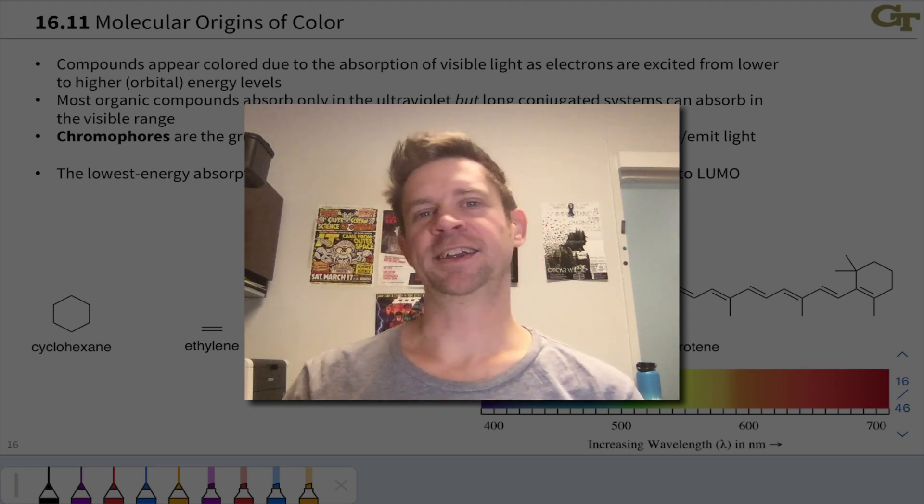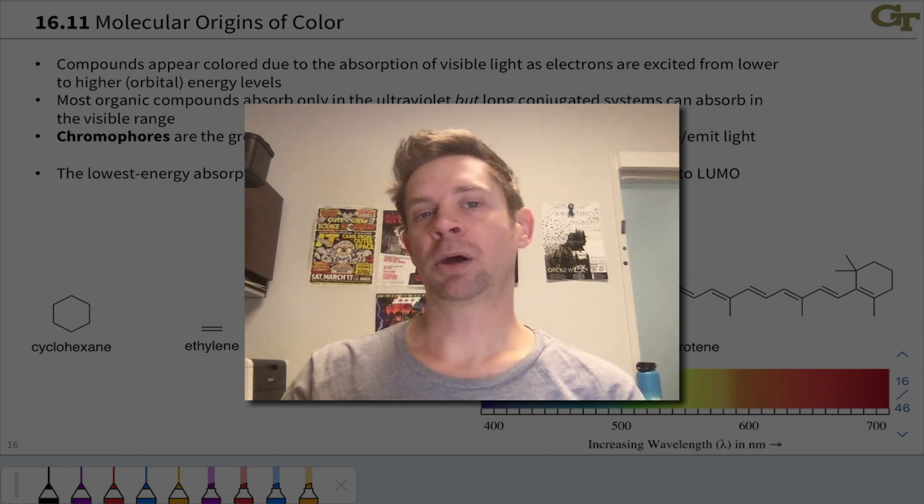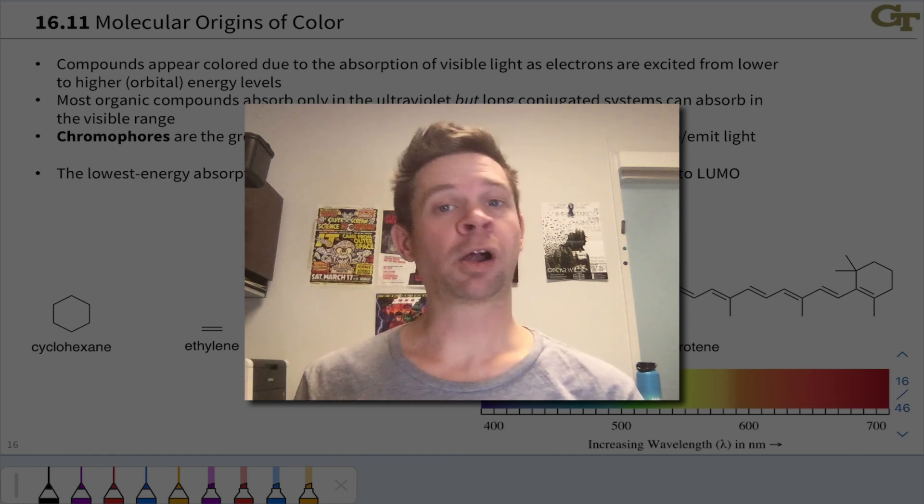Compounds like beta-carotene, chlorophyll, retinal, and other molecules containing long conjugated systems are often colored. So the molecular origins of color are highly relevant to conjugated molecules, and that's the topic of this video.